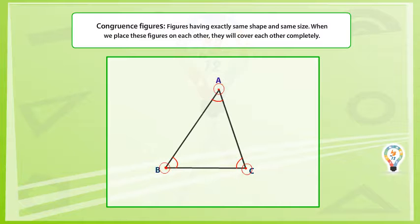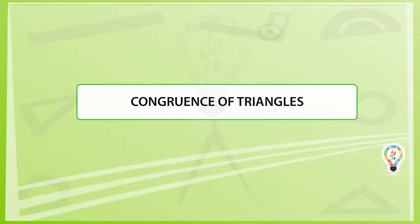AAS criteria: if corresponding two angles and any side of a triangle are equal, then the triangles are congruent.